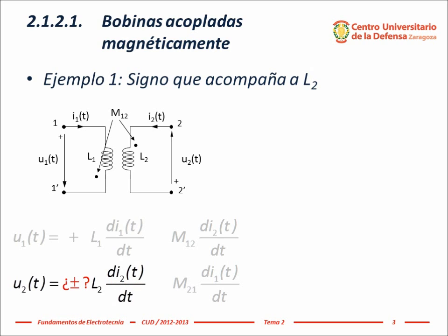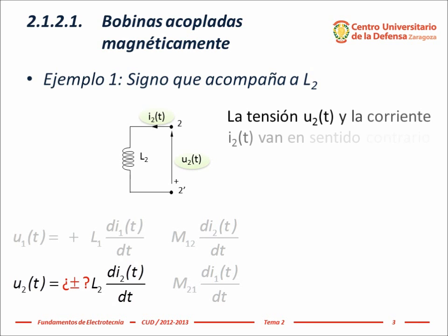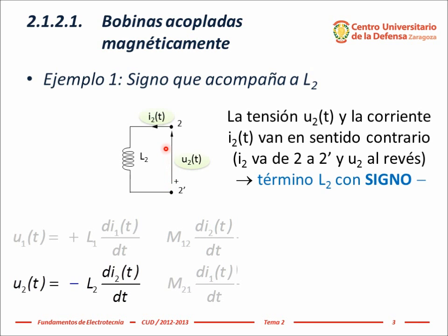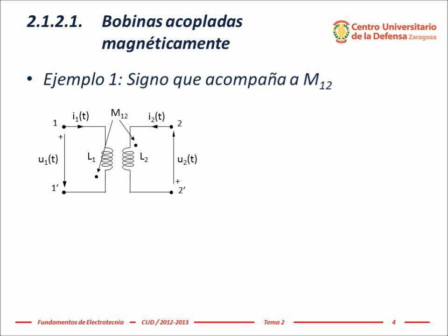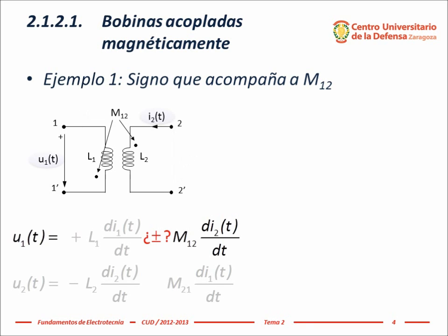Sign of the term containing the self-inductance coefficient L2. We look at the reference of the current flowing through coil 2 and the reference voltage of coil 2. Since voltage and current references are opposite in coil 2 — the current goes from terminal 2 to 2' and the reference voltage goes from 2' to 2 — the sign of the term containing L2 is negative.